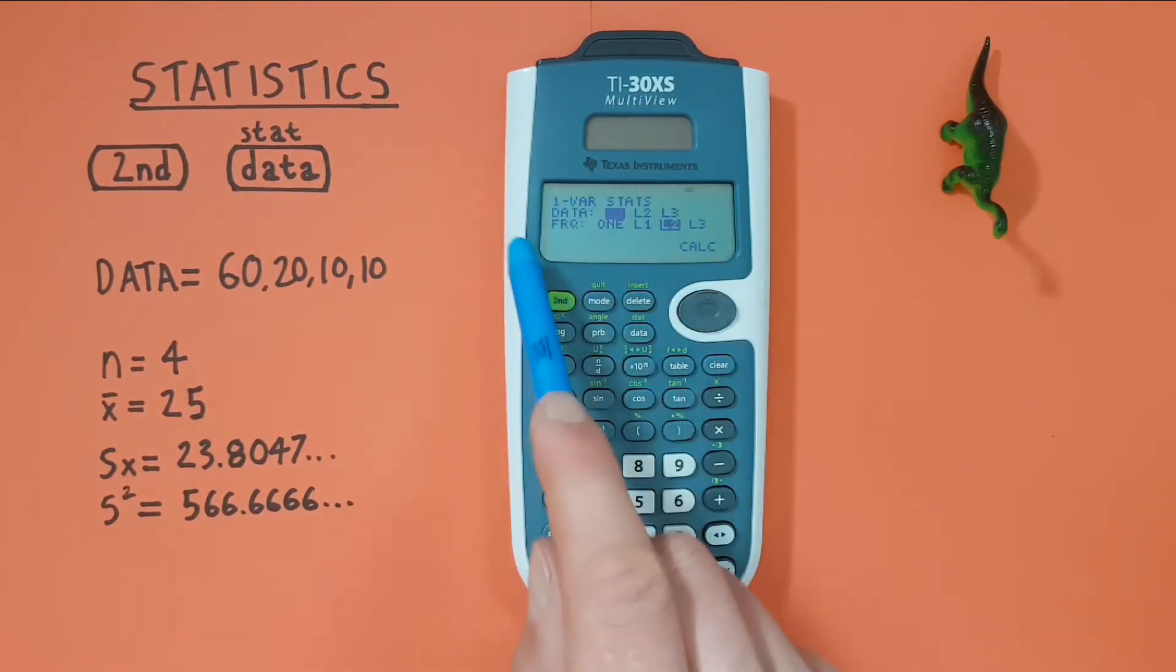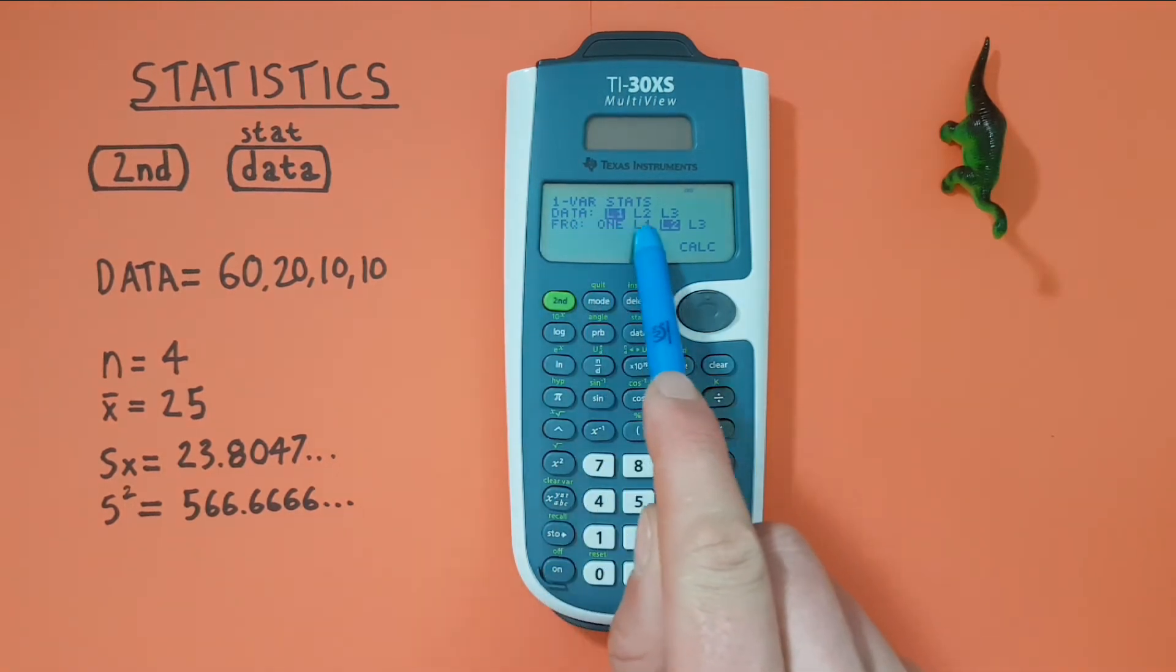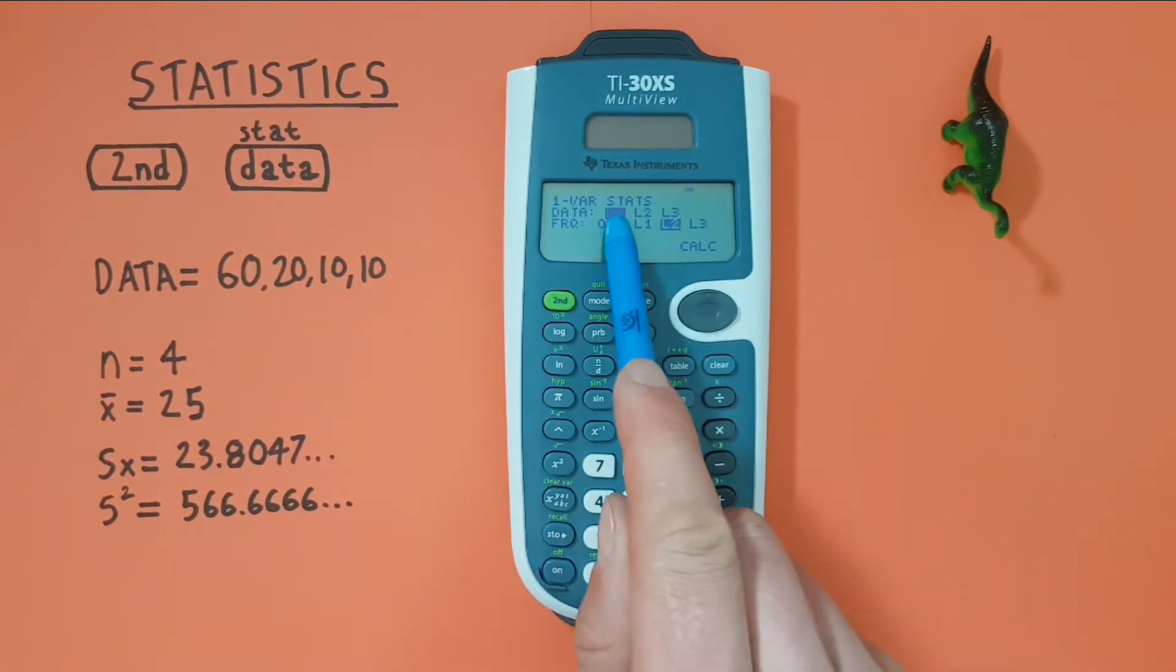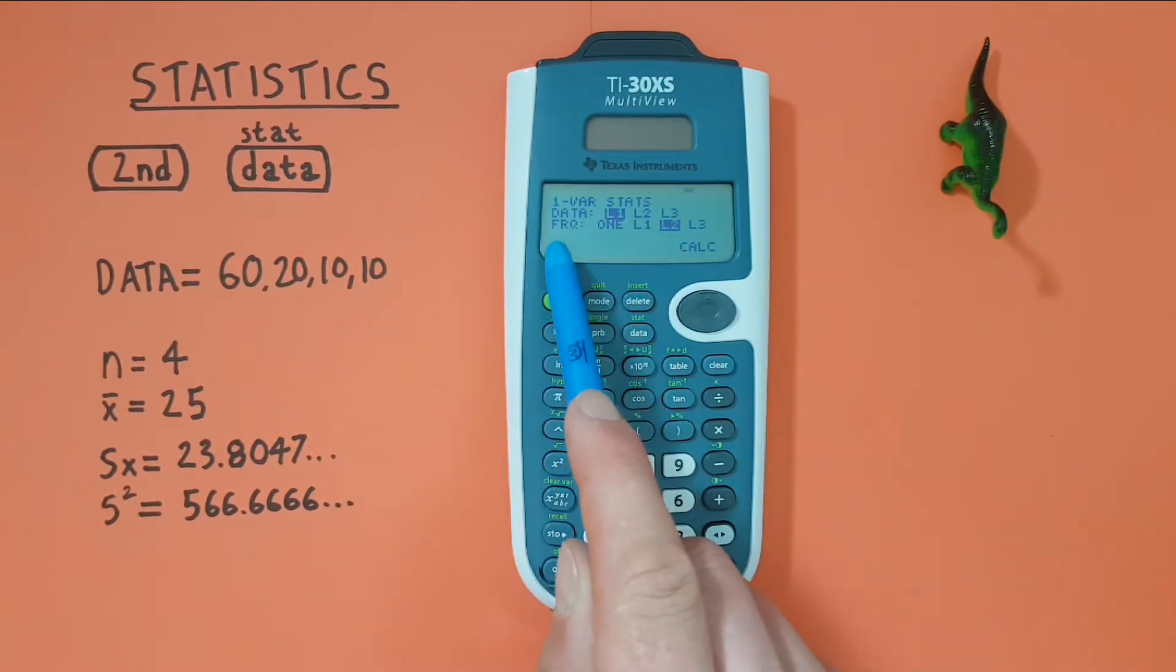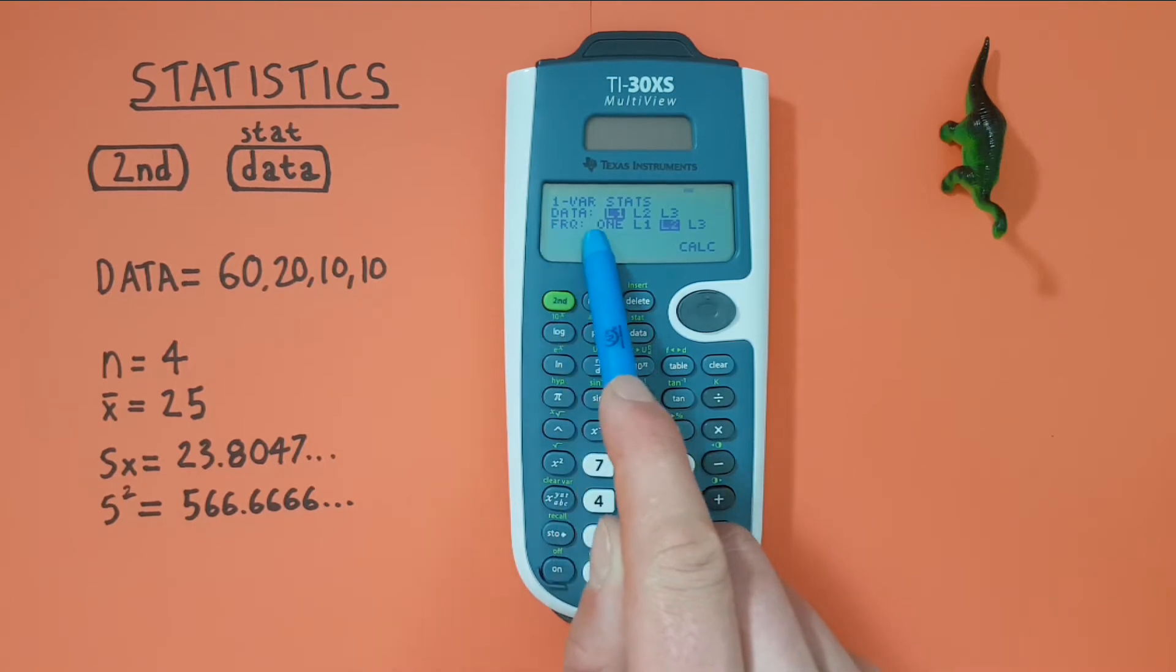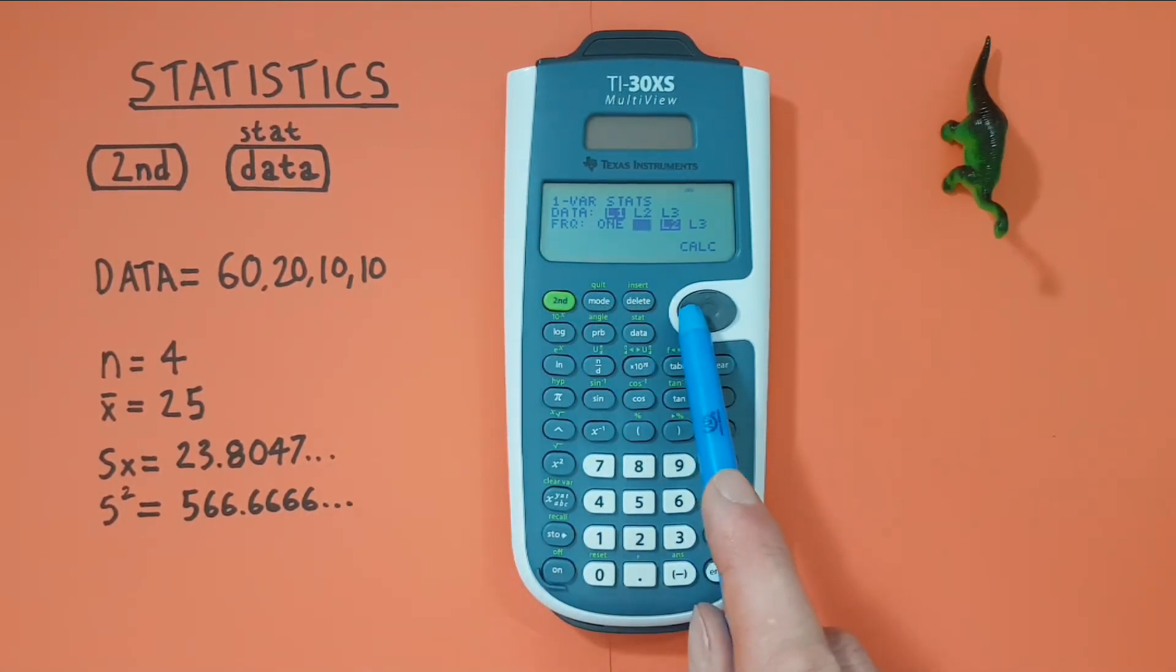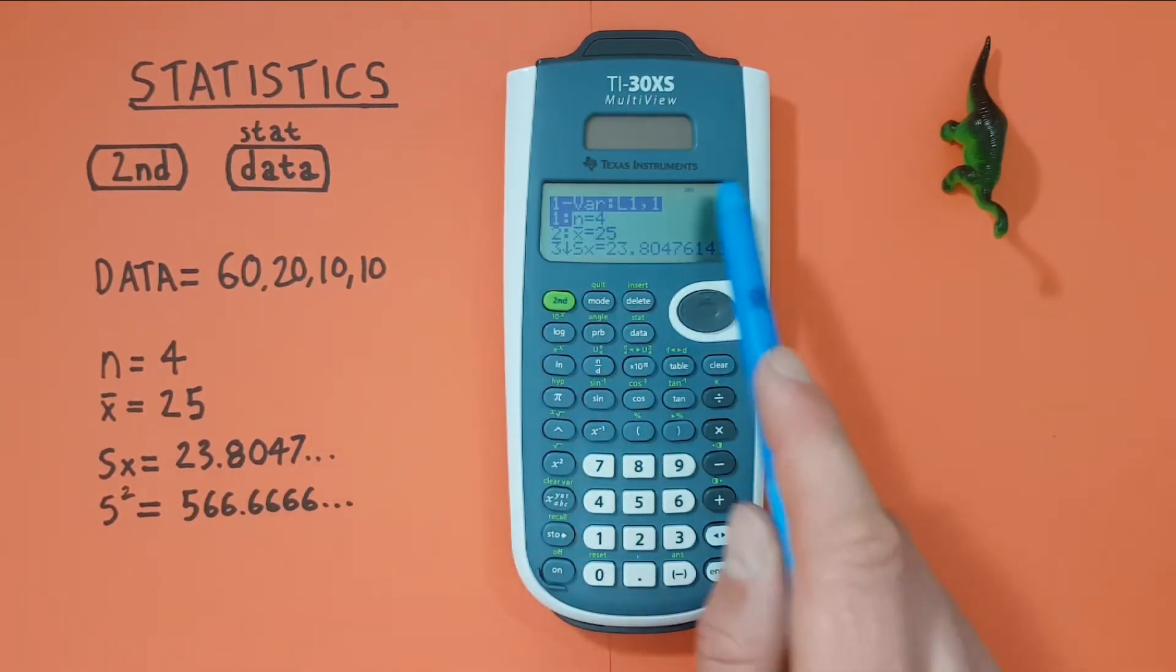And then it'll bring us to this menu here. Our data is in list one. That's what this first option is asking us. So we highlight the L1, press enter. Then we have frequency. This is helpful when we have some variables that occur multiple times in our data set. In this example we've entered all our variables individually. So we want to use the 1 option there, highlight that, press enter. Calc will then be highlighted. Press enter again and it'll take us to our results.